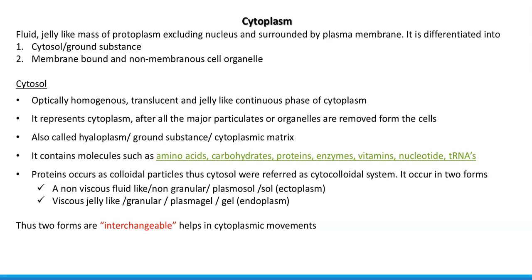Cytoplasm refers to the fluid, jelly-like mass of protoplasm excluding the nucleus, and it is surrounded by the plasma membrane. It is differentiated into cytosol or ground substance, and the other part is a membrane-bound or non-membranous cell organelle containing region.